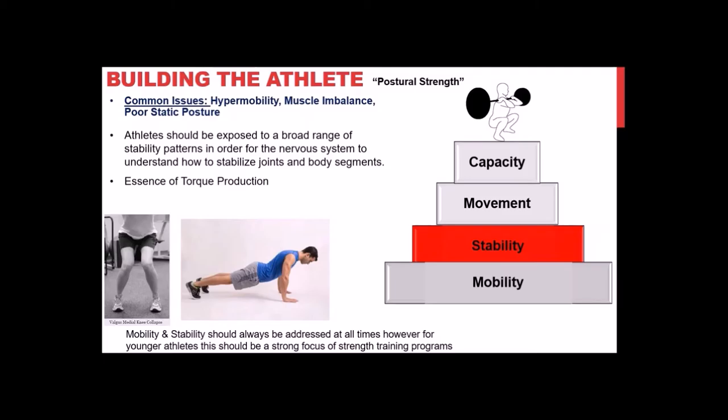You can see examples on screen: a girl whose knees collapse inward when squatting — that's not a flexibility issue, it's a stability issue. She lacks stability at the hips. The guy beside her performing a push-up has extreme spinal hyperextension before he even goes down — he has poor ability to stabilize his spine. These are simple movements where the body isn't reflexively stabilizing properly.